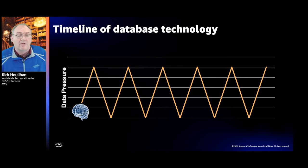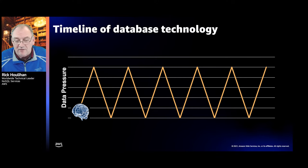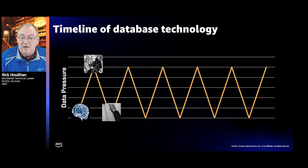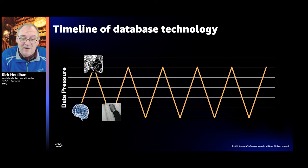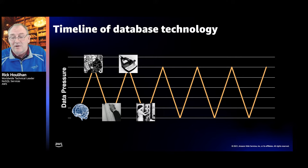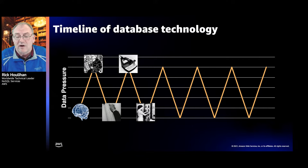We've invented many things over the years. The first database we had was the one between our ears — highly available, questionable durability, zero fault tolerance, single user system. So we invented ledger accounting, a system of writing things down to store structured data — that is the definition of a database. This powered public and private sector services for millennia until the 1880 U.S. Census. Herman Hollerith was tasked with processing that data and it took him eight years of a ten-year cycle, forcing him to invent the machine-readable punch card and punch card sorting machine. The era of modern data processing was born.